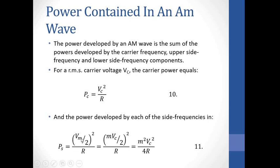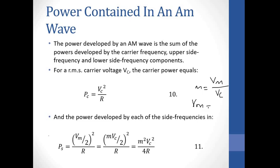As you can see, Vm over 2, including the 2, each is squared and then divided by R. From previous slides, we learned about the modulation factor M. We want to see how we arrive at this expression. M is equal to Vm over Vc. By making Vm the subject of the formula, Vm becomes MVc.